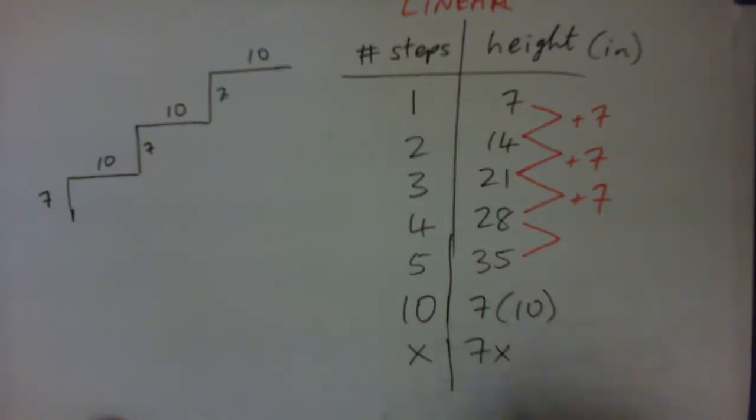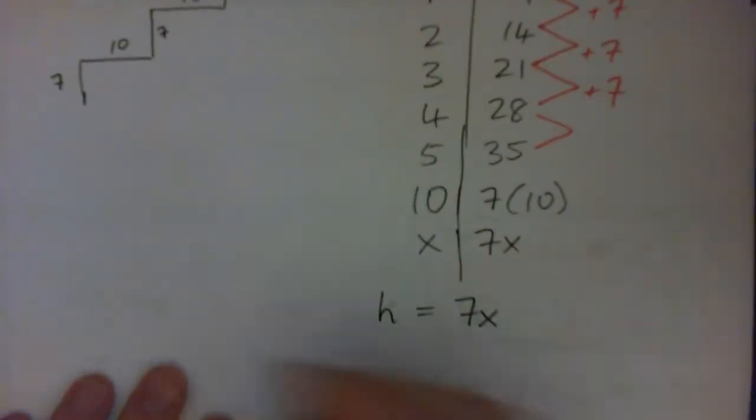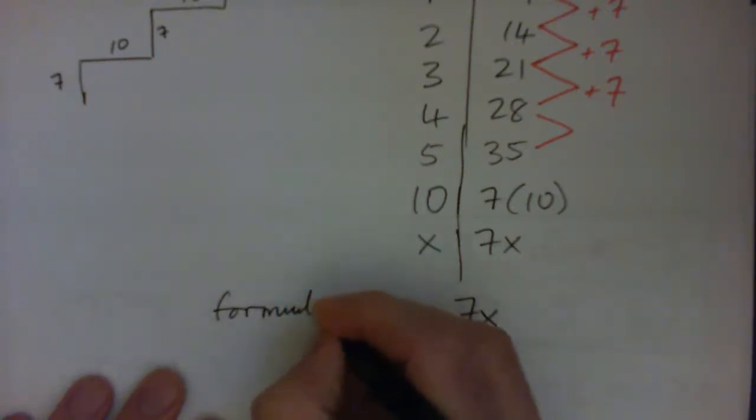Right. So our function is just the height h equals 7 times the number of steps, right? That's the function. That's the formula or the function or whatever, right? Formula, function, whatever, right? So that's all we need.